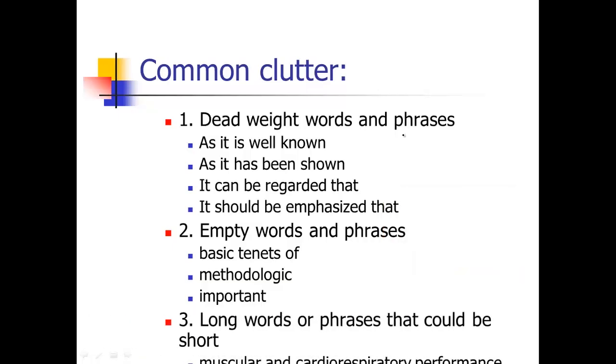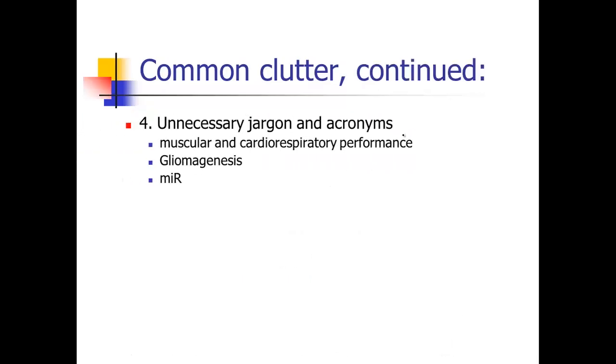And long words or phrases that could be short, such as muscular and cardiorespiratory performance, which is just a fancy way to say fitness. Another thing you should be on the lookout for is unnecessary jargon and acronyms. So again, muscular and cardiorespiratory performance would be an example. Gliomogenesis, we saw that in an earlier module. MIR, the use of acronyms. We want to avoid acronyms unless they're really, really standard and well-known throughout science.